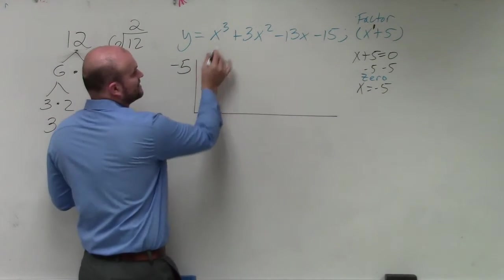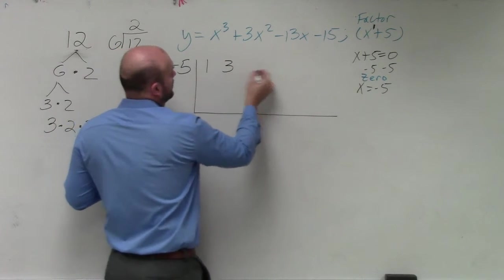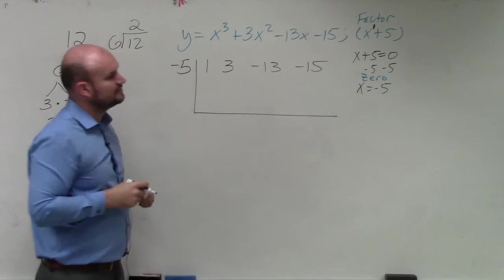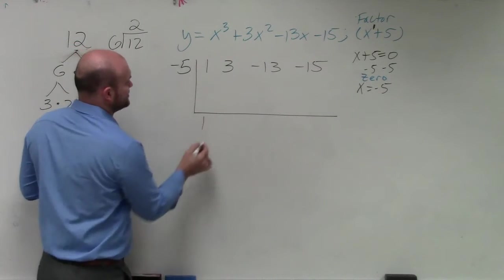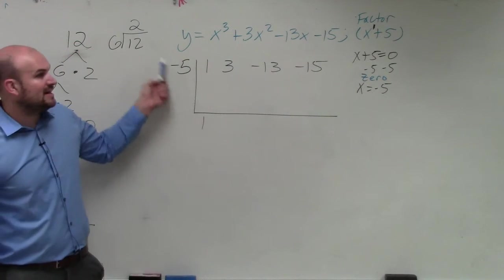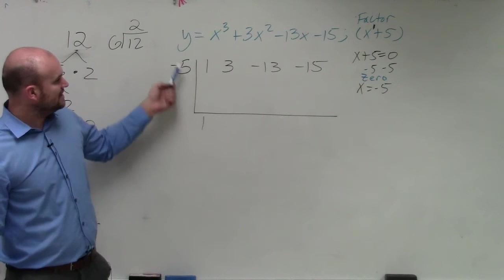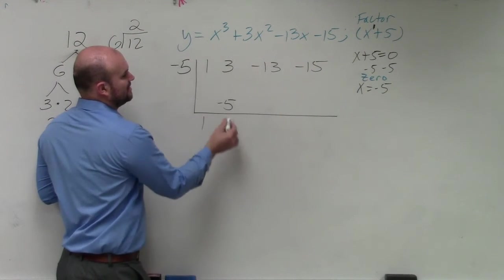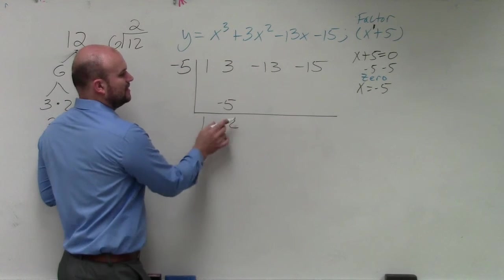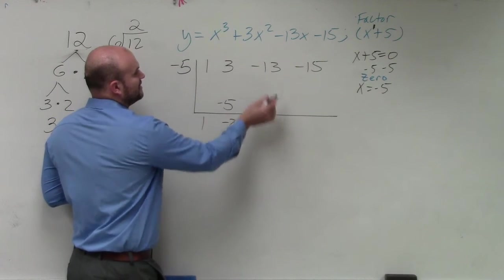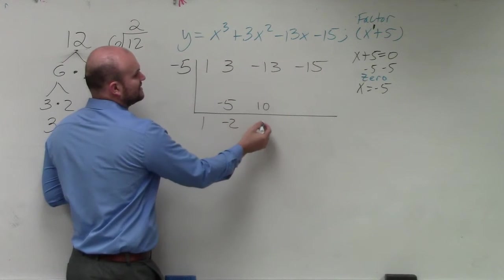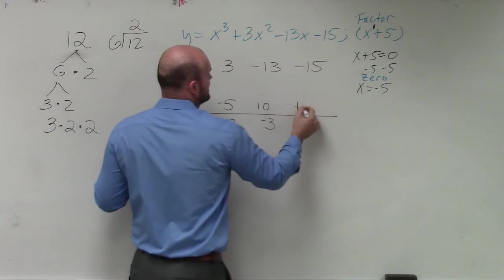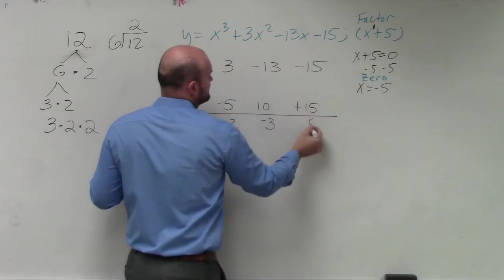So in this case, I just take the coefficients. I'm not missing any. So I do 1, 3, negative 13, negative 15. So now remember, you bring down the first one, that's your freebie. Then you multiply on the diagonal, add on the vertical. 1 times negative 5 is negative 5. 3 plus negative 5 is negative 2. Negative 2 times negative 5 is positive 10. Negative 13 plus 10 is going to be negative 3. Negative 3 times negative 5 is going to be positive 15. That gives you zero.